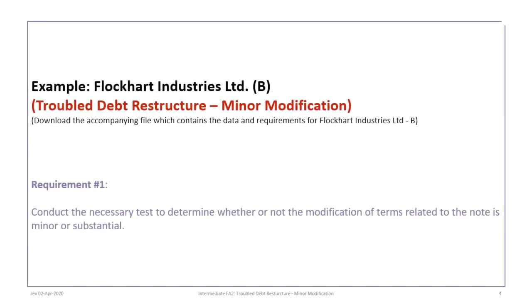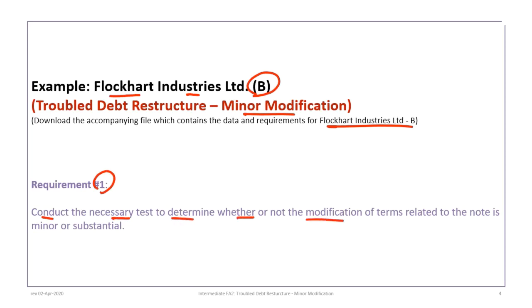This tutorial is based on the Flockhart Industries B example, which focuses again on troubled debt restructuring with minor modification. Please make sure that you have downloaded the required file and reviewed it in advance prior to proceeding. The first requirement will be to conduct the necessary test to determine whether or not the modification of terms related to the note is minor or substantial.